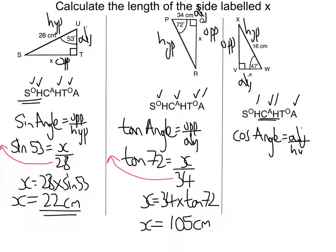Once I've done that, I would then sub in my values. In this case, the angle is 47, the edge is x, and the hypotenuse is 16.